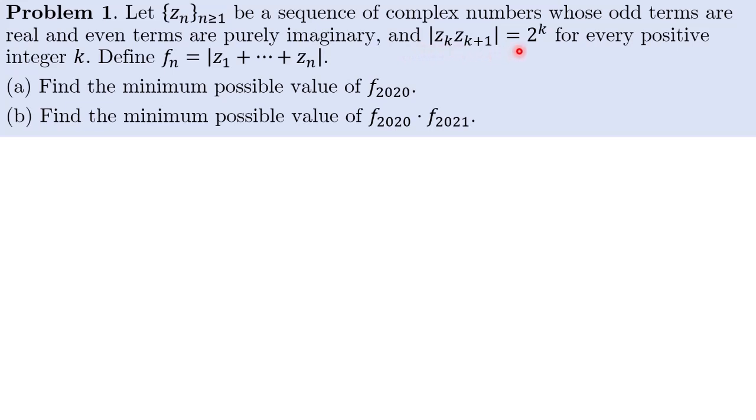Also given that absolute value of Zk, Zk+1 equals 2^k for every positive integer k. We define Fn to be absolute value of Z1 plus Zn.